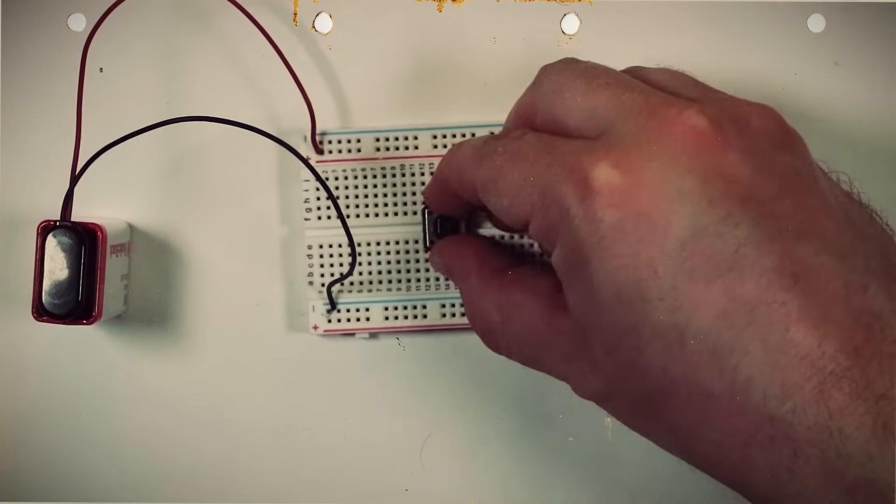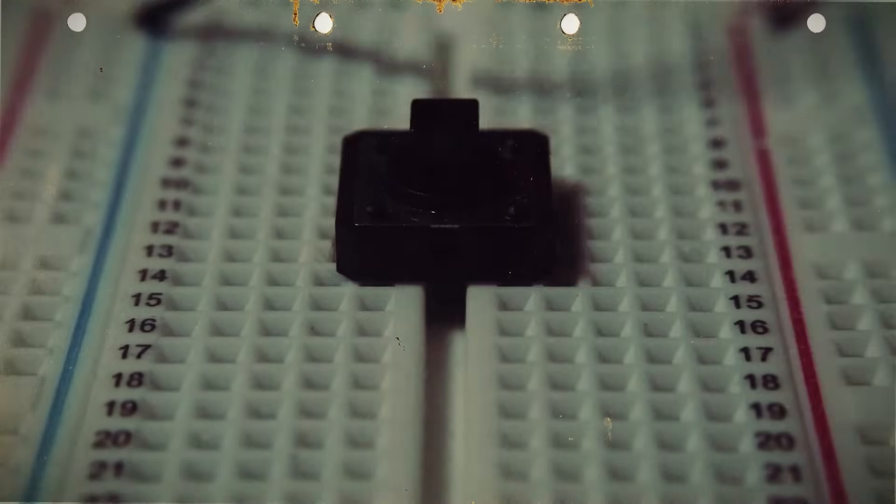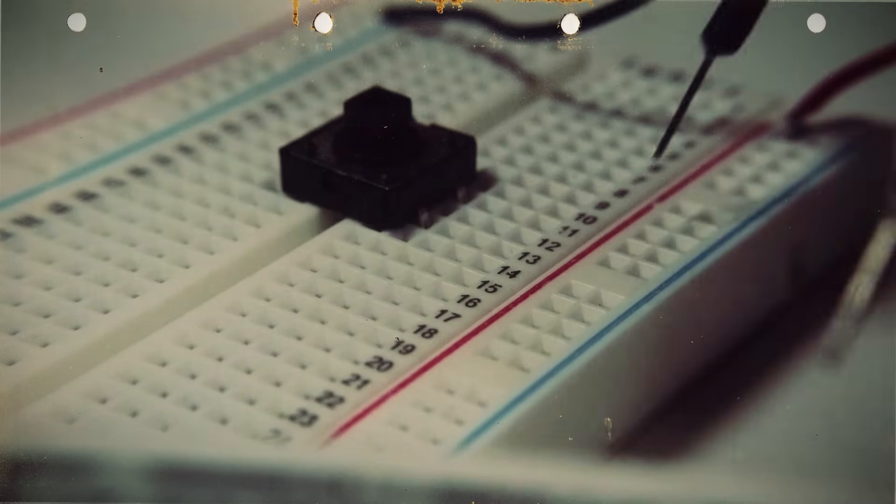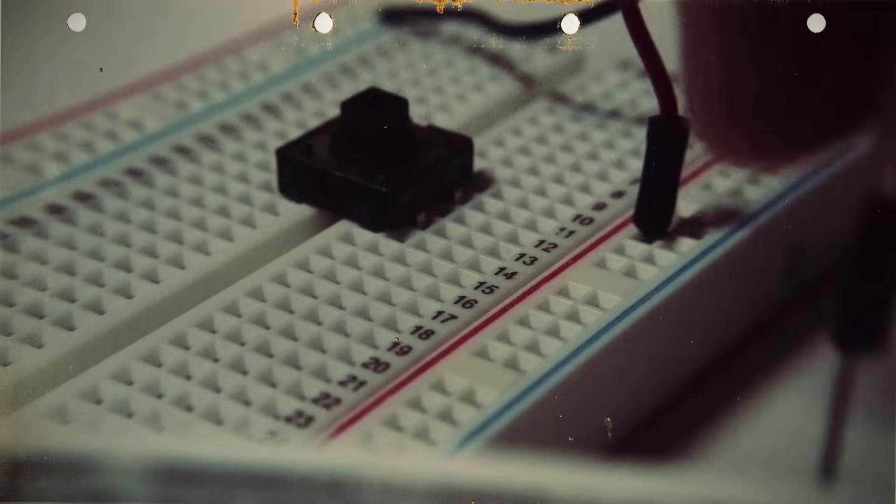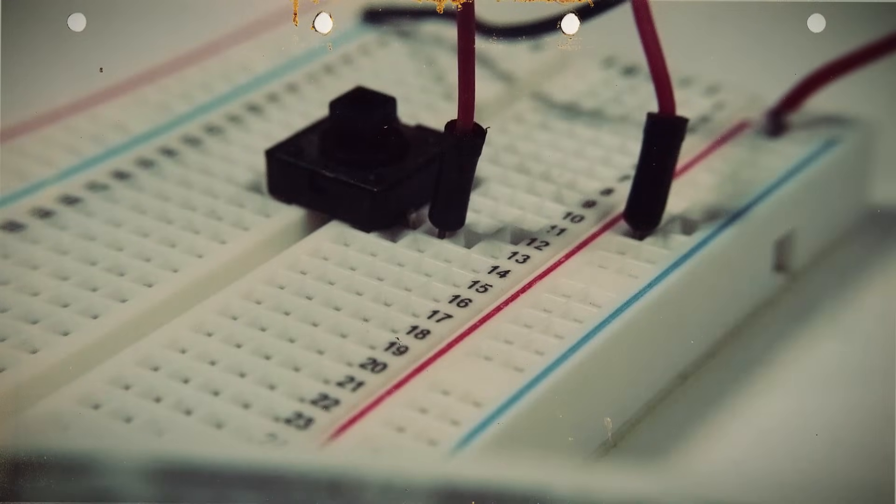Let's add the button to the breadboard and just have it sitting across the ravine to make sure the positive and negative legs are completely separated. Using the piece of wire, we can plug it into any hole that's connected to our positive power source and plug the other end of the wire into one of the columns that a button leg is connected to.